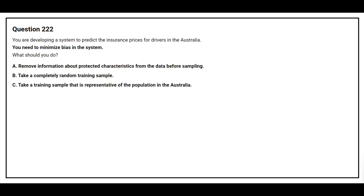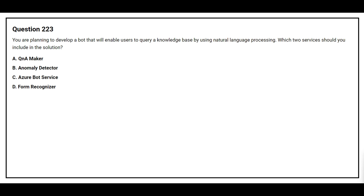Question 222: You are developing a system to predict insurance prices for drivers in Australia. You need to minimize bias in the system. What should you do? Option A: Remove information about protected characteristics from the data before sampling. Option B: Take a completely random training sample. Option C: Take a training sample that is representative of the population in Australia. The correct answer is Option C: take a training sample that is representative of the population in Australia.